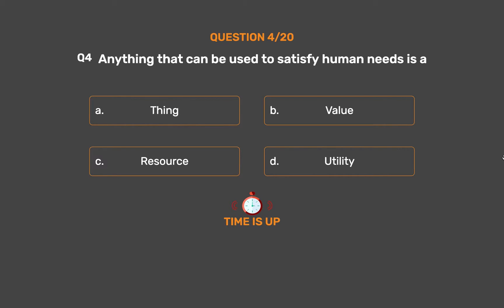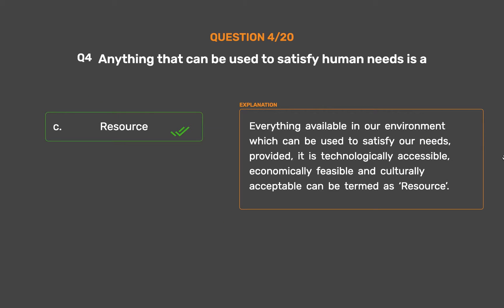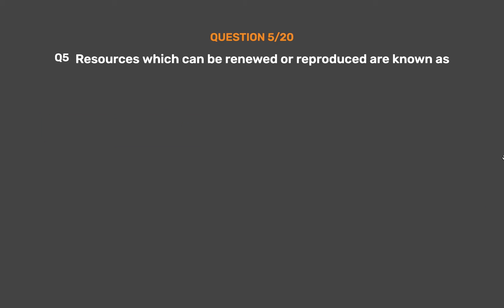The correct answer is Option C: Resource. Everything available in our environment which can be used to satisfy our needs, provided it is technologically accessible, economically feasible, and culturally acceptable, can be termed a resource.